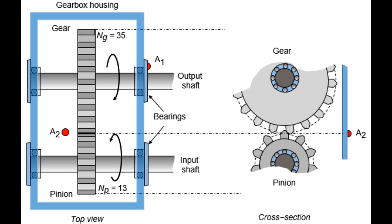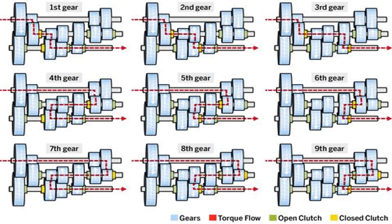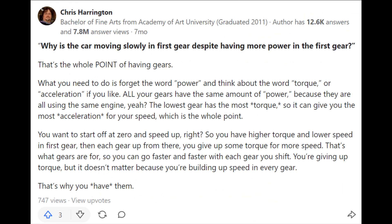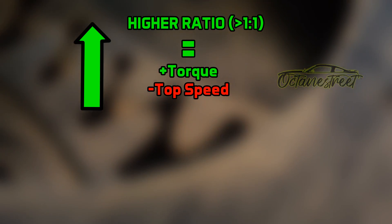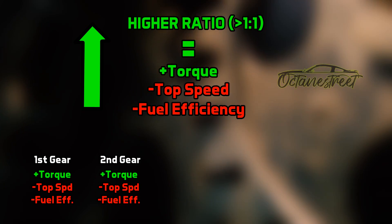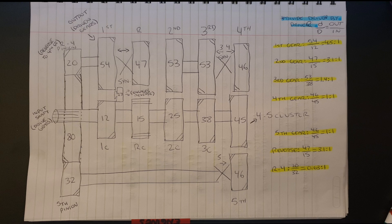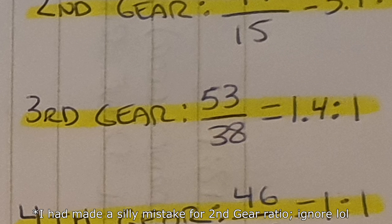You might be wondering what these gear ratios even mean. Essentially, a gear ratio is the number of times your input shaft rotates in the same time it takes your output shaft to do one full rotation. Despite having the highest gear ratio, first gear usually tops out at a very slow speed — and that's because the higher the gear ratio, the more torque that gear will produce, at the sacrifice of top speed and efficiency. This balance between torque, speed, and efficiency shifts as you move further into your gears. To illustrate this, using a gear cluster image from my Level 1 Drivetrain assignment, we see that third gear has a gear ratio of 1.4 to 1.